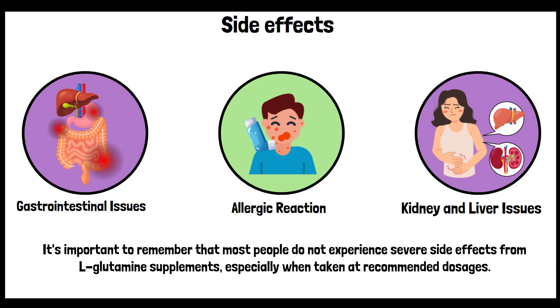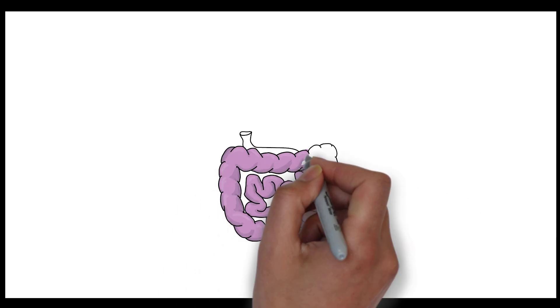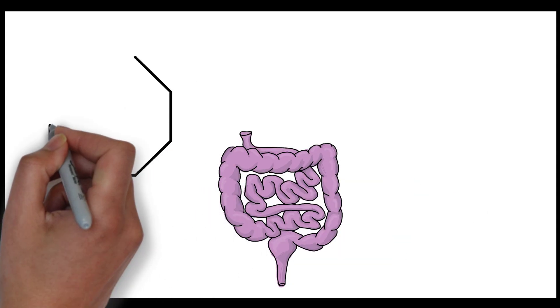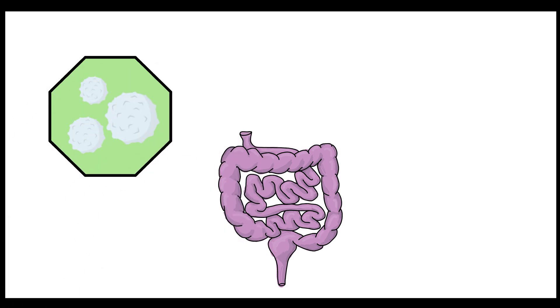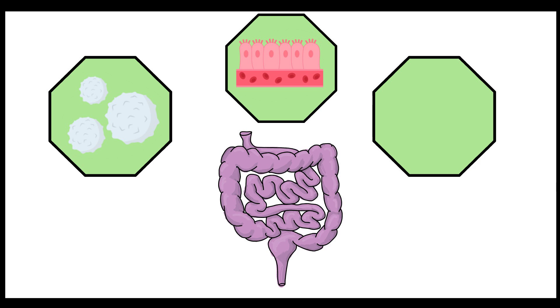Glutamine is a great amino acid that plays a huge role in your gut health. It enhances immune cell function, helping to fight off infections. It is essential in maintaining gut barrier integrity, which prevents harmful substances from entering the bloodstream. And it aids in nutrient absorption by supporting a healthy gut lining, which is key for overall health and well-being.